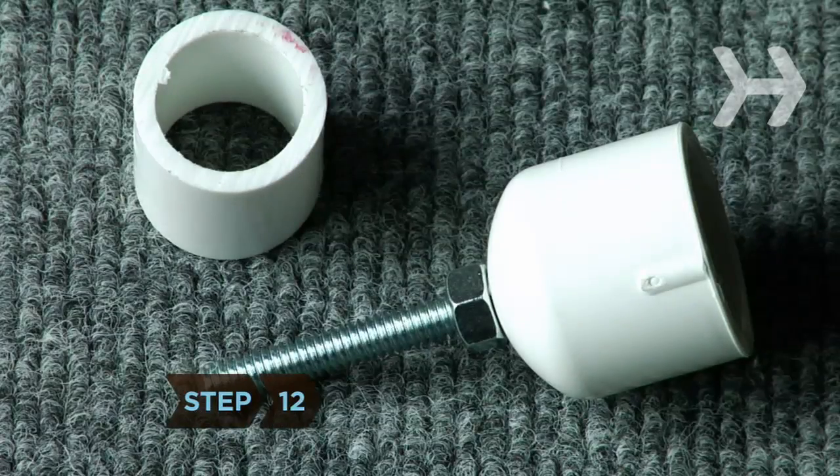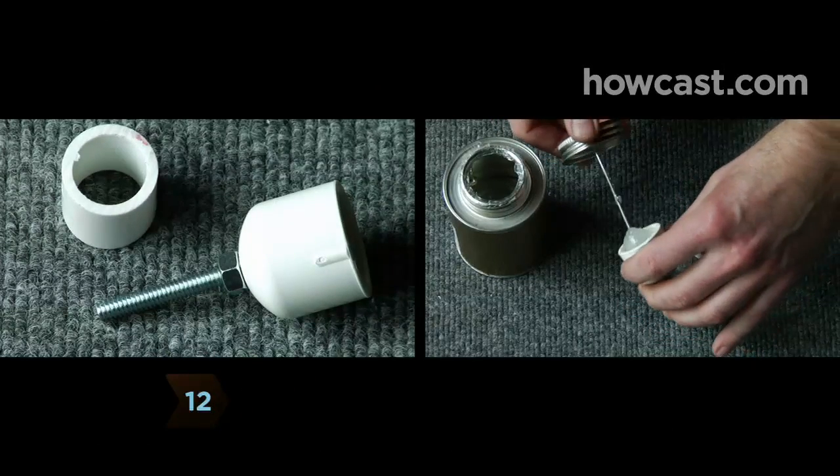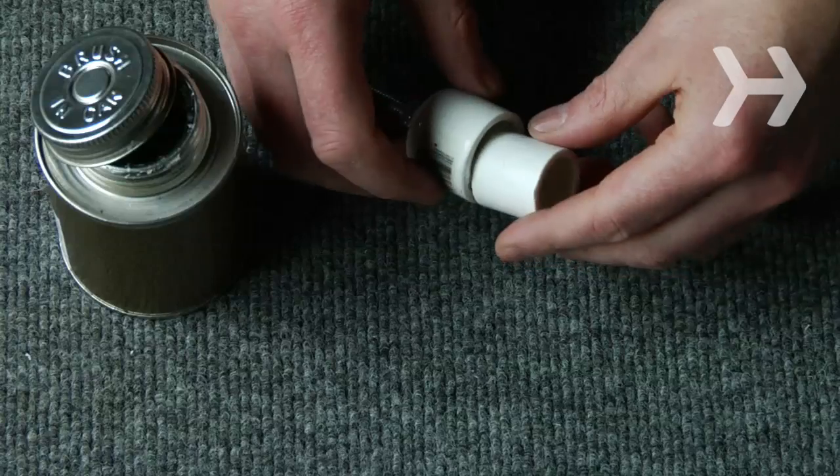Step 12. Attach the underside of the cap to the remaining 1-1/2-inch piece of PVC and cement them together. Let them dry.